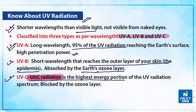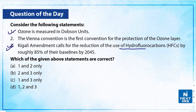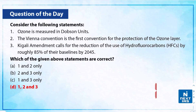Now for a practice question. Consider the following statements: first, ozone is measured in Dobson units; second, the Vienna Convention is the first convention for the protection of the ozone layer; third, the Kigali Agreement calls for the reduction of hydrofluorocarbons by roughly 85 percent of their baseline by the year 2045. All three statements are correct, so the correct answer is option D — one, two, and three. With that, we wrap up today's edition of Topic of the Day. I hope you liked the video. Take care and do stay tuned.